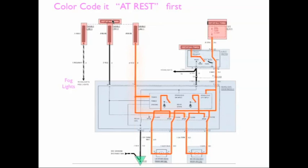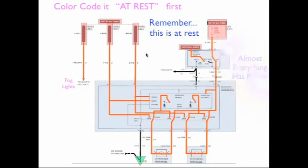We have a fusible link over here that is hot at all times. It comes down and puts a power input into this module, then continues until it hits an open. The second fusible link does the same thing — it comes down with its own power input into the module and then stops at an open. So we have two powers, meaning this module can tell if one or the other fusible link or headlight doesn't have power. And then of course the third fusible link is for the headlights. This is the power side — almost everything has power at rest.